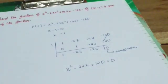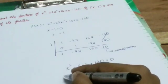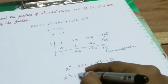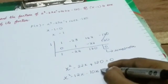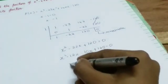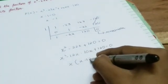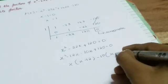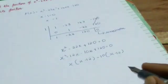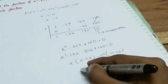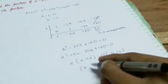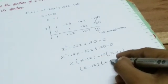To factorize, we note 1 times 120 equals 120. The factors of 120 that work are minus 12 and minus 10, since minus 12 times minus 10 equals 120, and minus 12 plus minus 10 equals minus 22. So we split: x squared minus 12x minus 10x plus 120 equals 0, giving x(x minus 12) minus 10(x minus 12) equals 0, and taking 10 common, we get (x minus 12)(x minus 10).